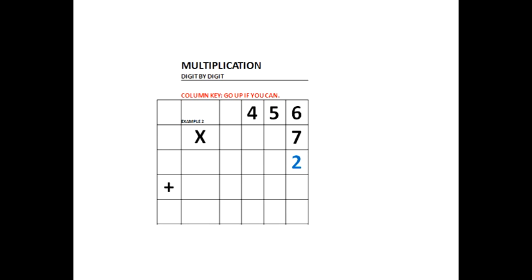We are about to see the second example for multiplication, a new method. Our first product in 456 times 7 is 42. The 2 is under the 6, which is in the 1's column. The 4 is in the next column to the left of 2.